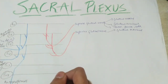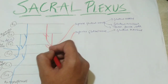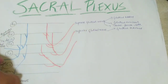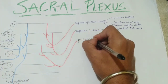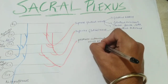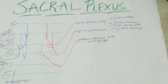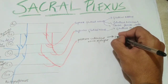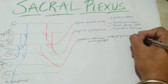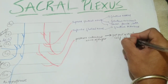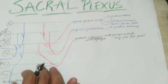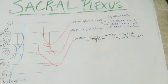The next nerve from the anterior division is the posterior cutaneous nerve of the thigh, arising from S1, S2, and S3 fibers. It comes from the inferior gluteal region and supplies the posterior part of the thigh, the calf region, and reaches as far as the heel joint — providing cutaneous supply to the posterior thigh and calf.